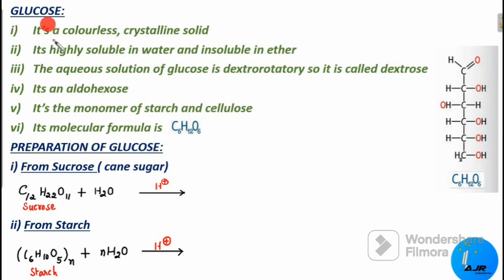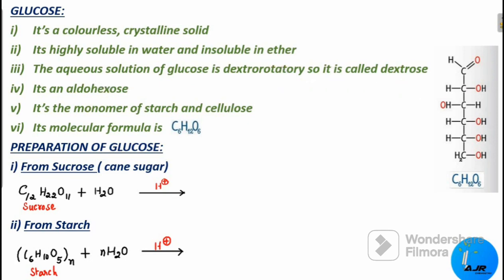Naturally occurring glucose is colorless and crystalline solid. It is highly soluble in water and insoluble in ether. The aqueous solution of glucose is dextrorotatory — it rotates plane polarized light in the clockwise direction — that's why it is called dextrose. Glucose is also classified as an aldohexose.